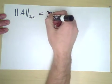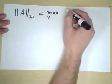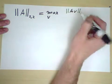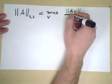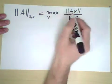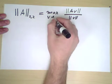over all v of the size of A v as a vector, the magnitude of A v as a vector over the magnitude of v as a vector. And to make this not absurd, let's say nonzero vectors.